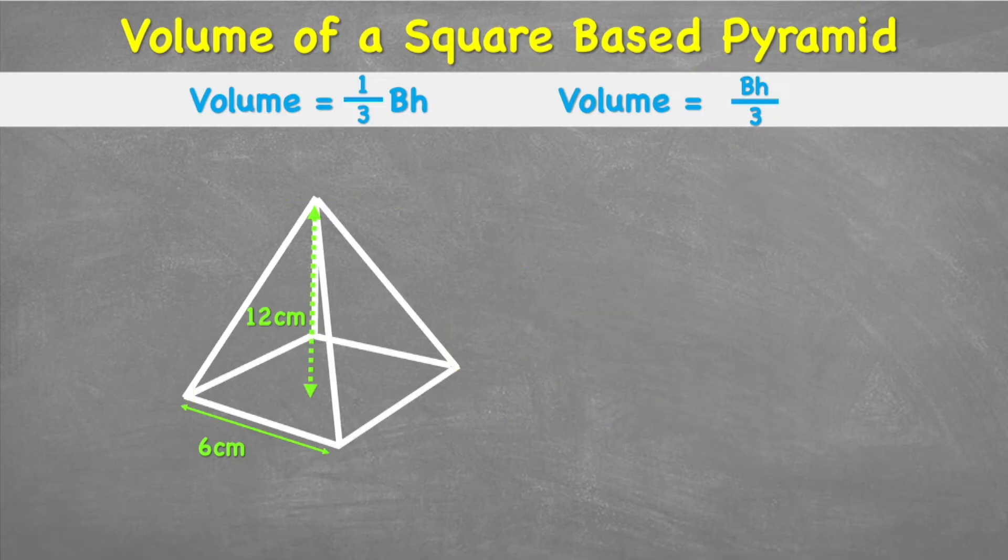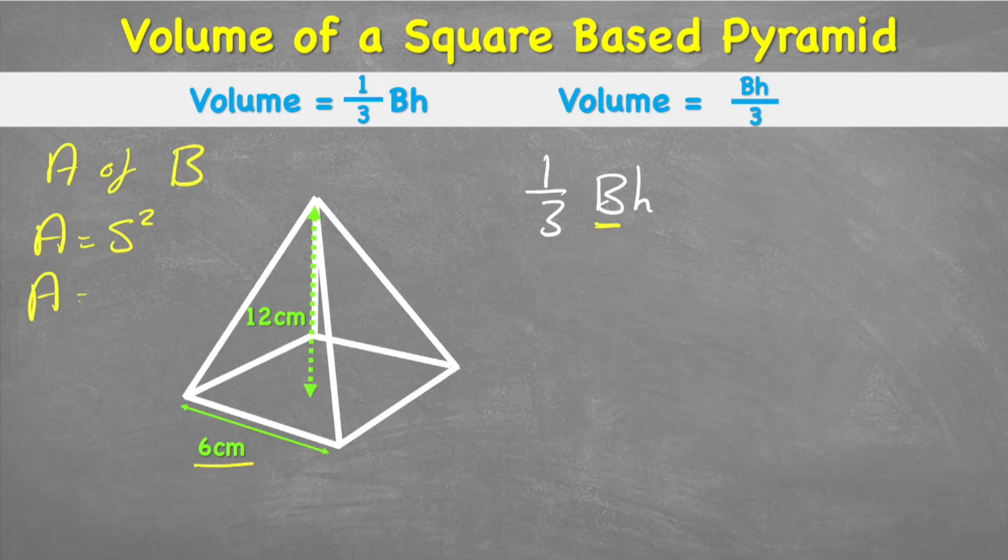Let's have a go with this example. I'm going to start by putting my formula, which is one-third times the area of the base times height. Let's find the area of the base—we can see one of the side lengths is 6 centimeters. We'll use the formula to find the area of a square, which is area equals side squared. In this case, area equals 6 squared, therefore area equals 36.